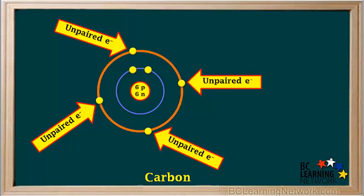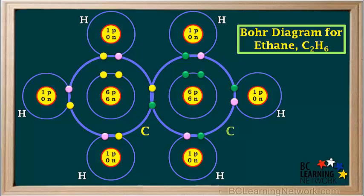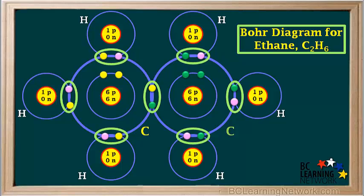Because an atom of the element carbon can have four unpaired electrons in its valence shell, a carbon atom is capable of forming four covalent bonds. This gives rise to a large variety of covalent compounds containing carbon. Here is the Bohr model for a common carbon compound called ethane, C2H6. Ethane is one of the components of natural gas. If we circle each bonding pair, you can see that this molecule has seven bonding pairs and seven covalent bonds.